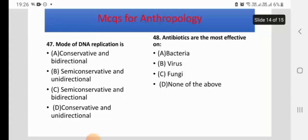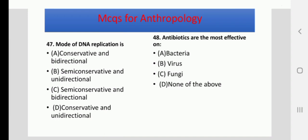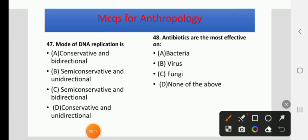The mode of DNA replication is — conservative and bi-directional, semi-conservative and unidirectional, semi-conservative and bi-directional, or conservative and unidirectional. The right answer is C: semi-conservative and bi-directional.